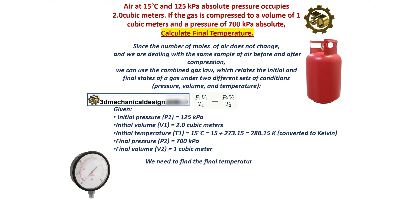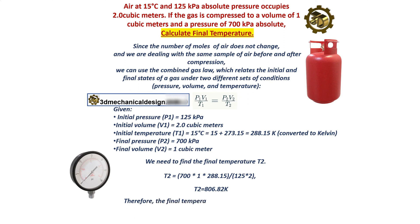T2 equals 700 times 1 times 288.15 divided by 125 times 2. T2 equals 806.82 K. Therefore, the final temperature of the air after compression is approximately 806.82 Kelvin.